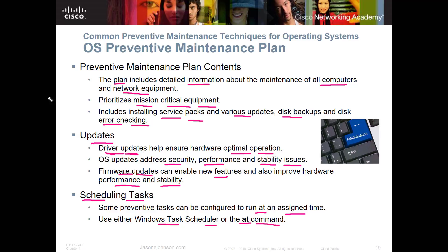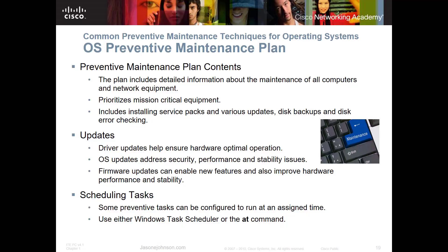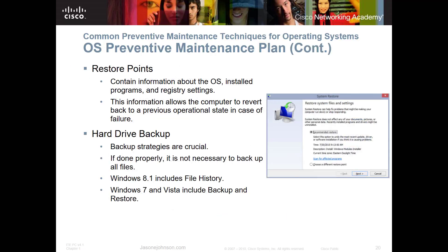Now, restore points: when you create a restore point on Windows 7 or Windows 8, it contains information about the operating system, installed programs, and registry settings. It's important to always create a restore point before making any changes to your computer — before installing a new program, updating drivers, or changing hardware. Make sure it's there and that you can restore from it, so if any problems occur you can revert back.